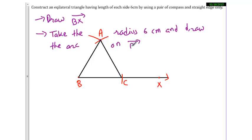Next step: take the radius 6 centimeters and draw the arc on ray BX by taking center B. Name it C.